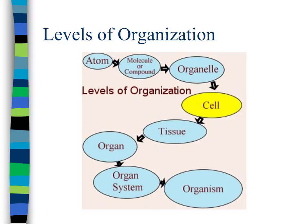Many cells together make up a type of tissue, such as muscle, liver, or brain tissue. Those tissues come together to make up organs, which are made of many different types of tissue. Many organs make up an organ system, and different organ systems come together to make up the organism. We're studying the level of the cell today — this is an example of what we call emergent properties.